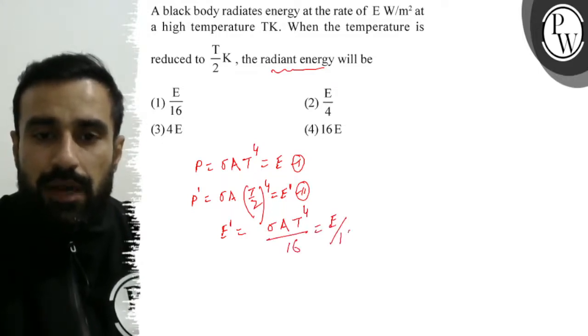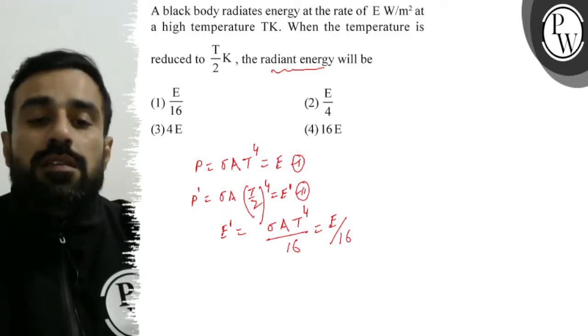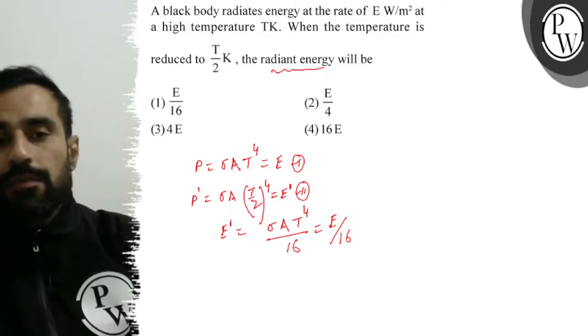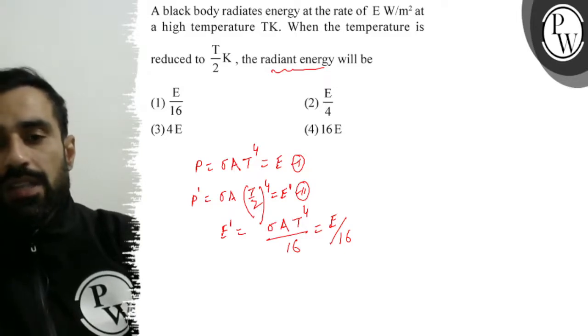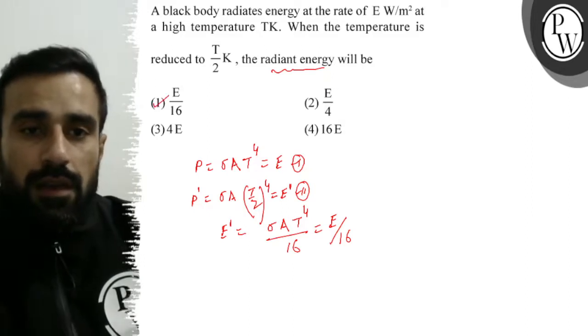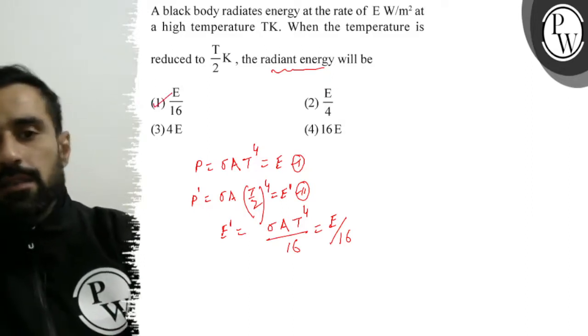Therefore, E dash is E by 16. This means that when temperature is made T by 2, the power of radiation will become 1 by 16 times of initial. Option 1 is more appropriate. And this is the correct option.